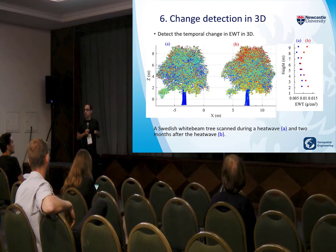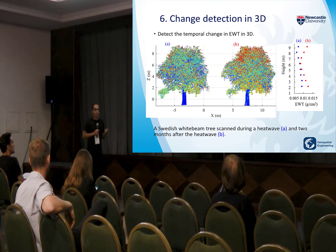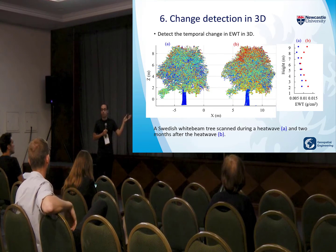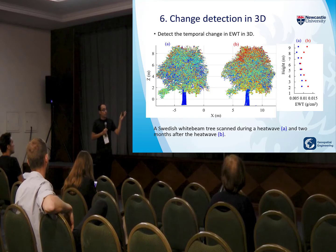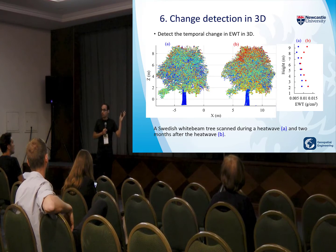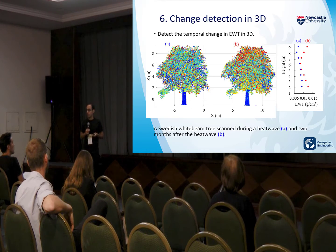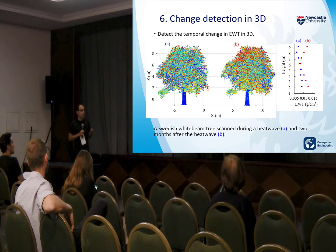We can also do 3D change detection. We can see how this is the same tree scanned during a heat wave and two months after the heat wave. We can actually see how the tree is drying, how the vertical profiles are changing, and how the tree is redistributing resources during dry conditions.